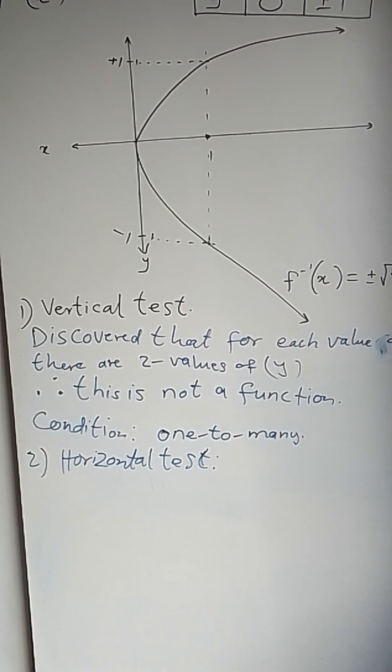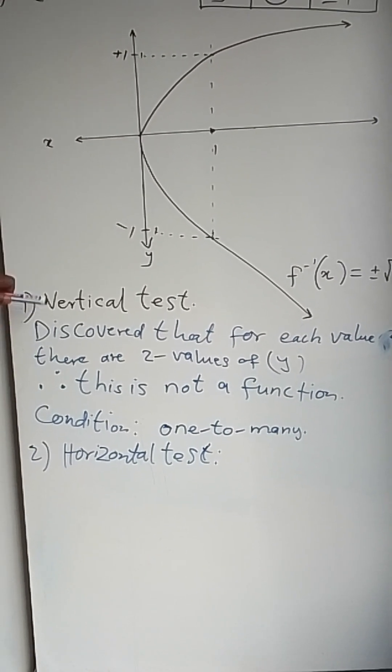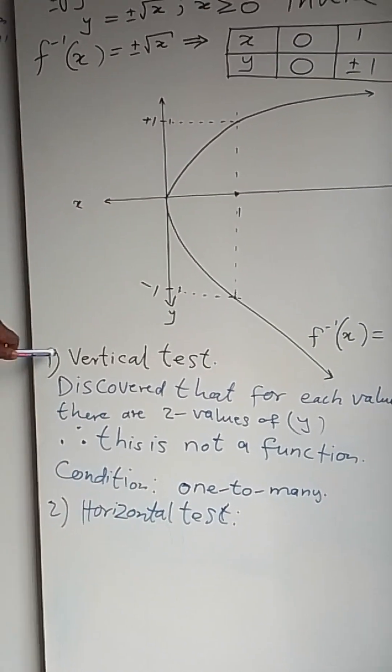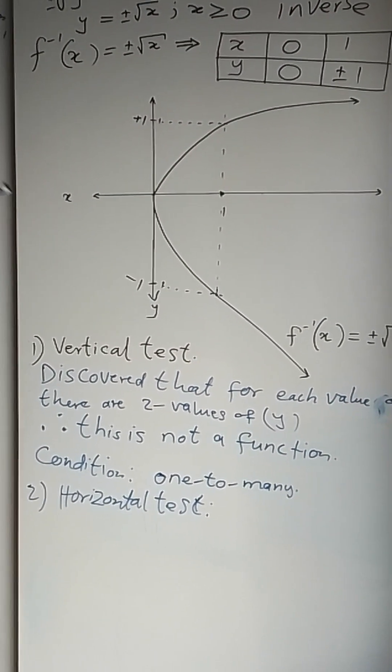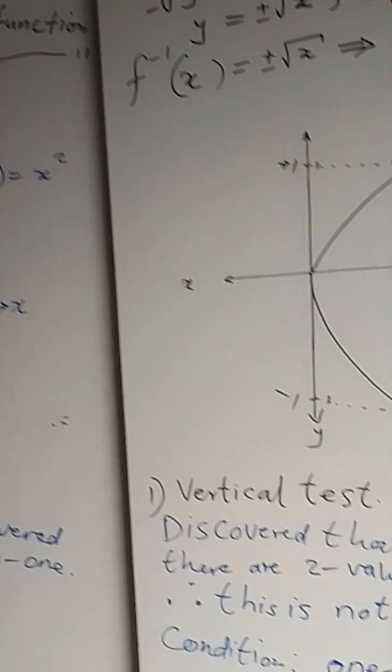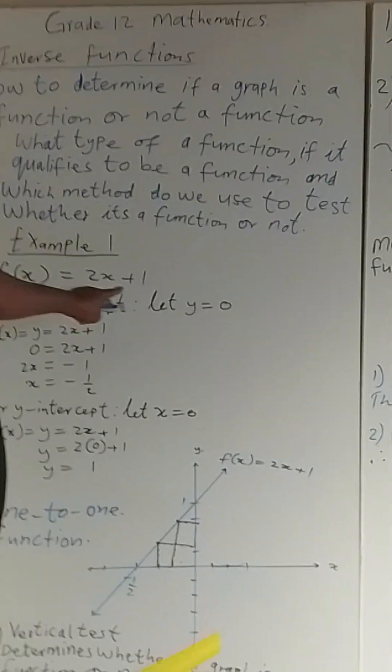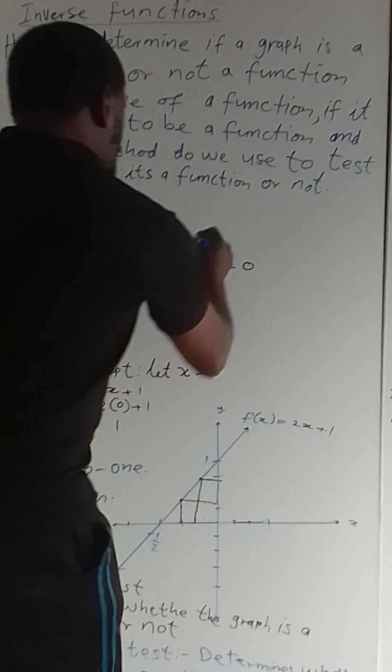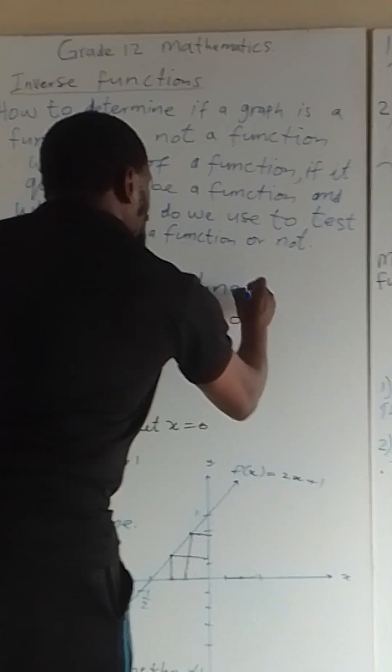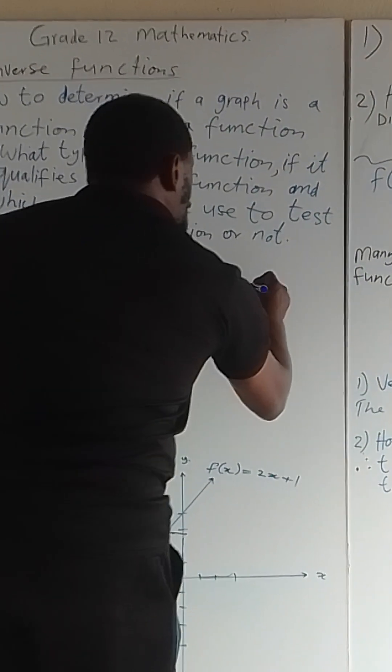You cannot perform a horizontal test because the graph has failed to be called a function. Let's see where we started. We have started by finding the linear equation.